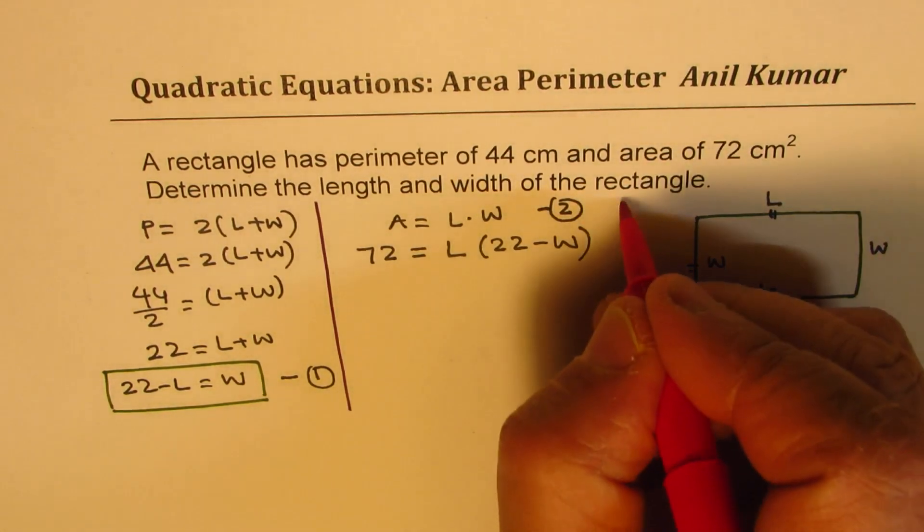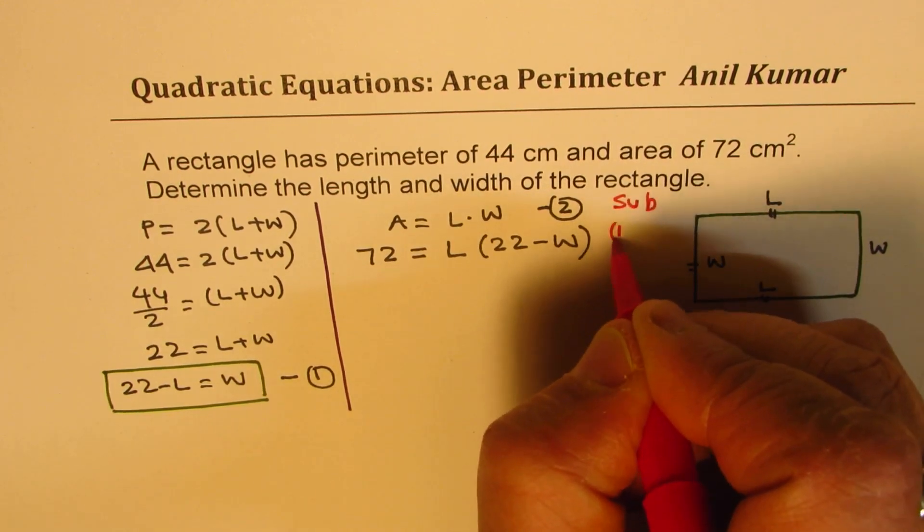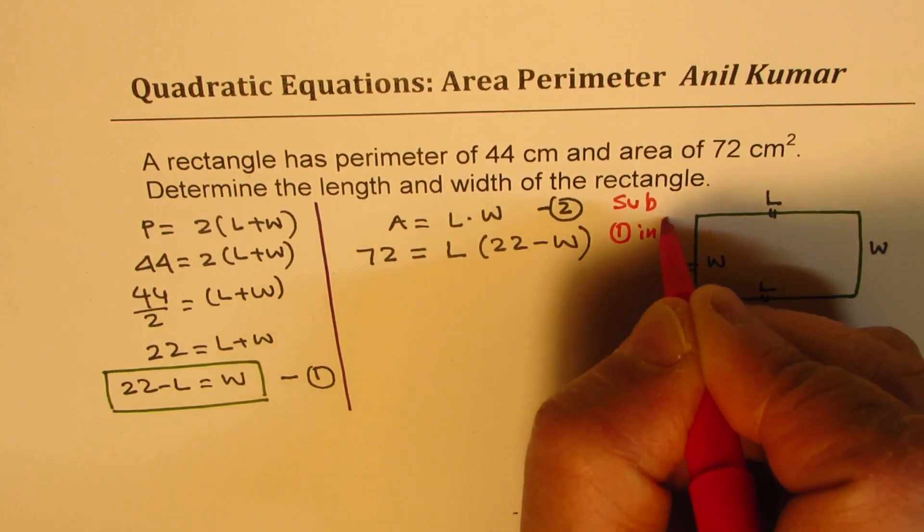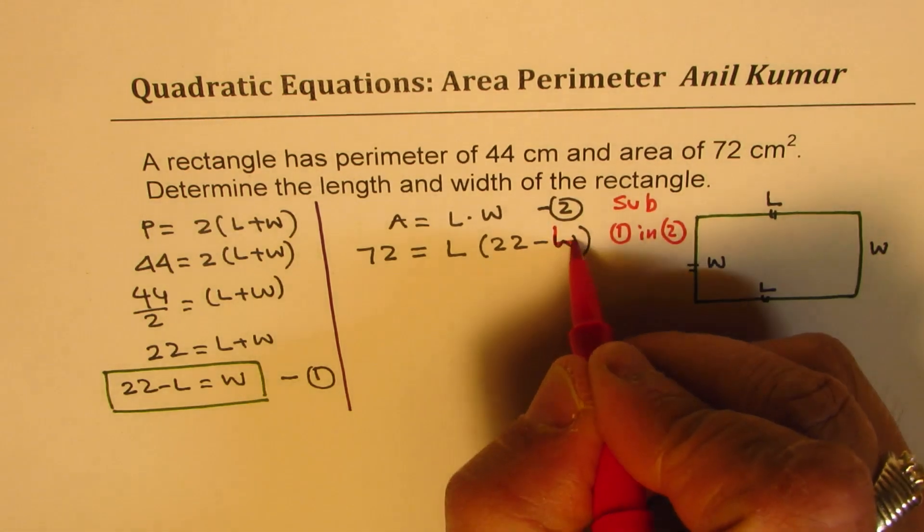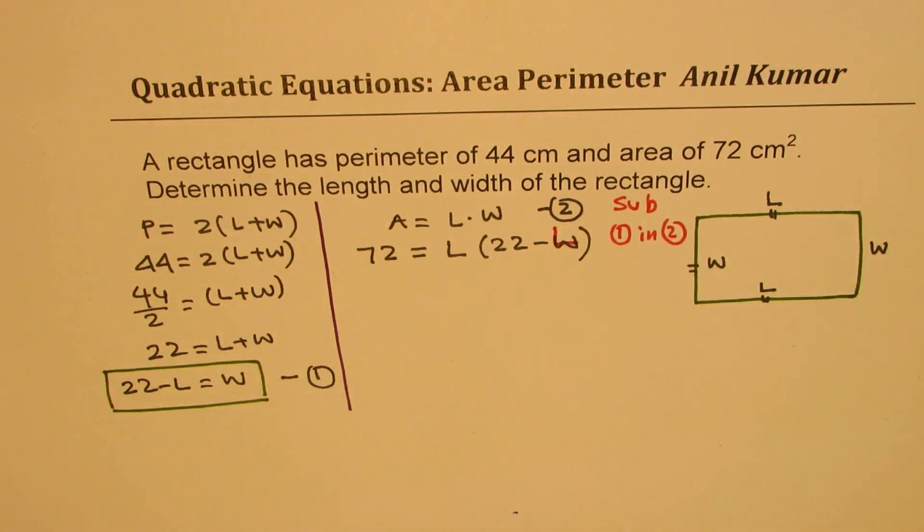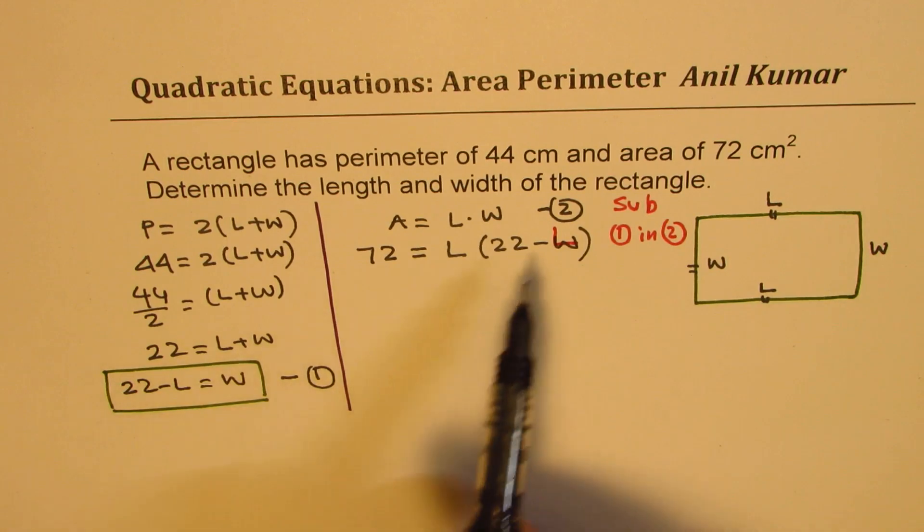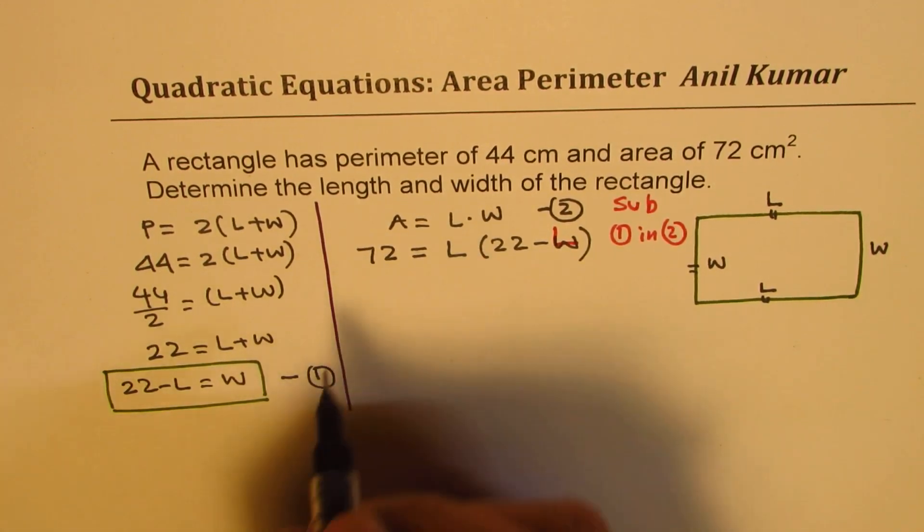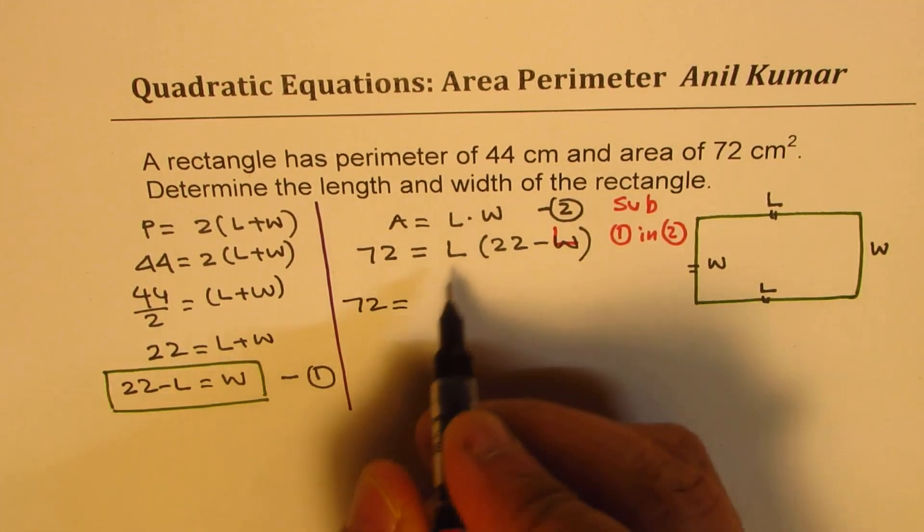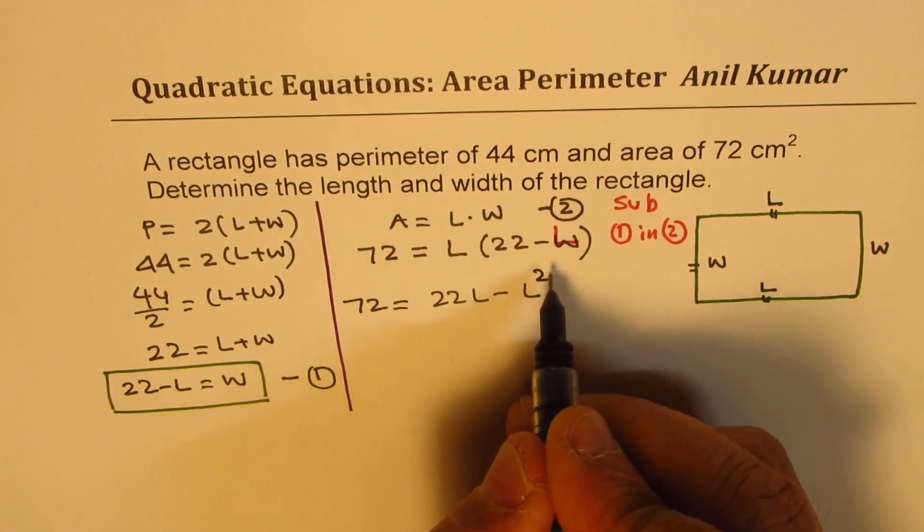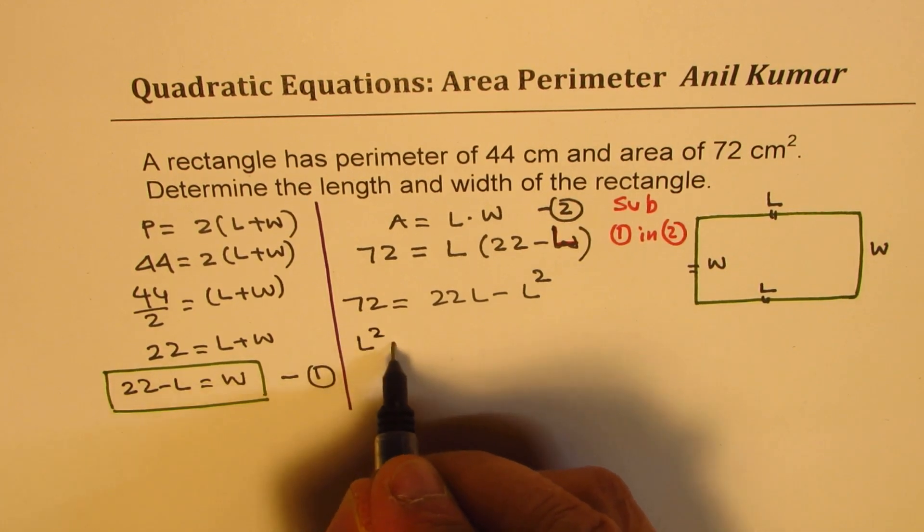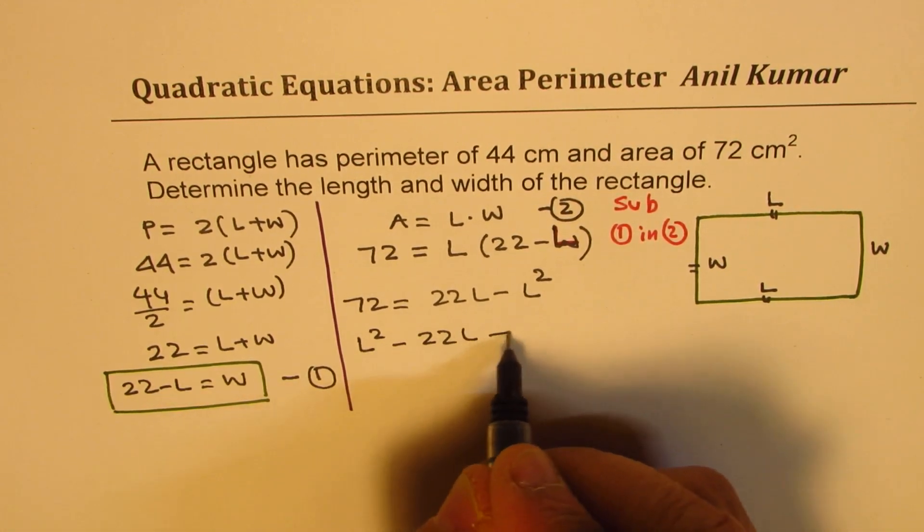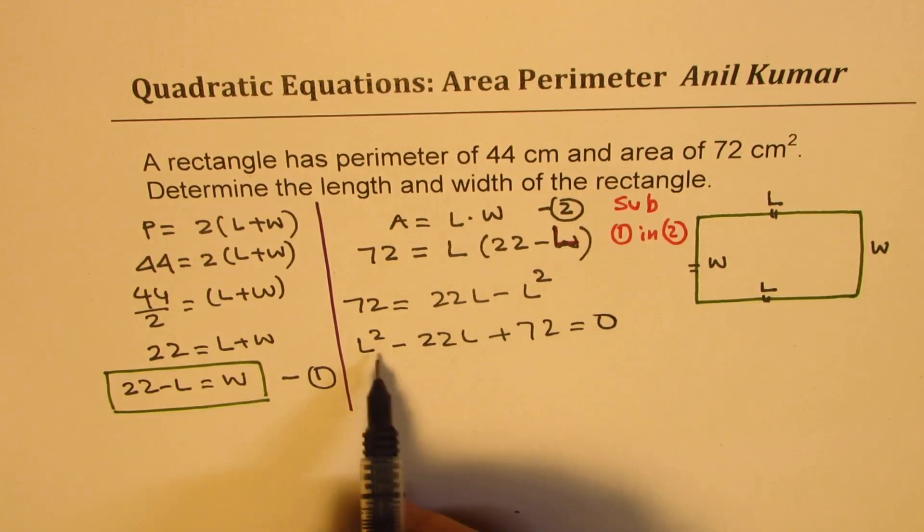Now you can actually solve this equation and get the result. So we get 72 equals 22L minus L squared. Bring them together: L squared minus 22L plus 72 equals zero.